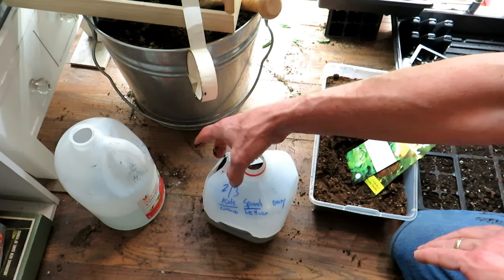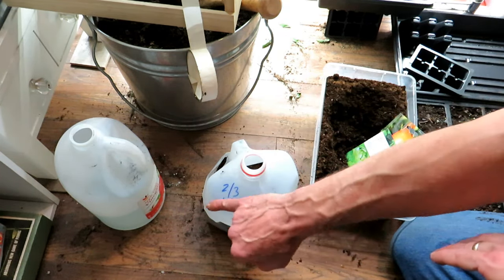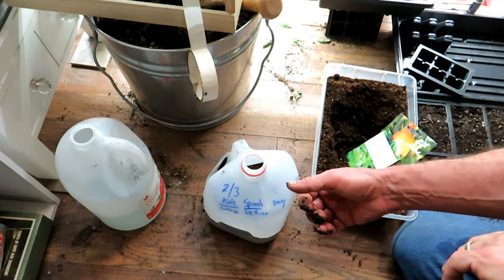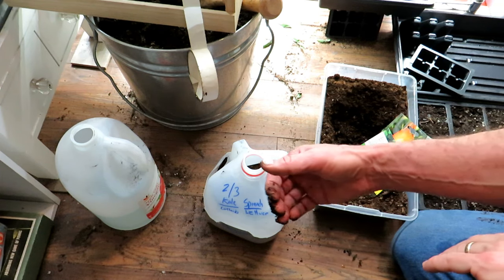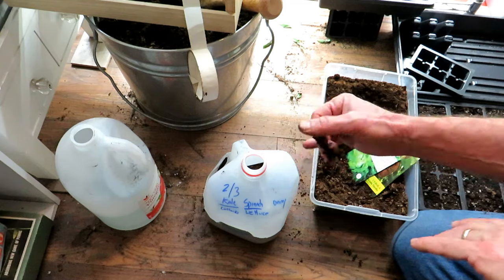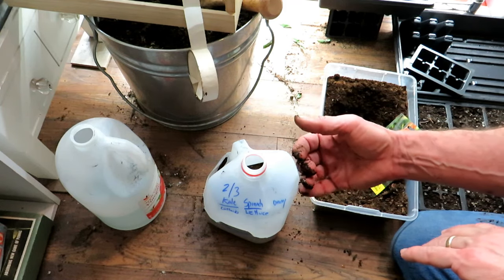So I like to mark February 3rd. Now you could just do all kale in here. You could do all collards, just spinach, just lettuce. You could do broccoli, cabbage, cauliflower, just one variety. That says onions. Or just onions. Leeks too. Any cool weather crop.